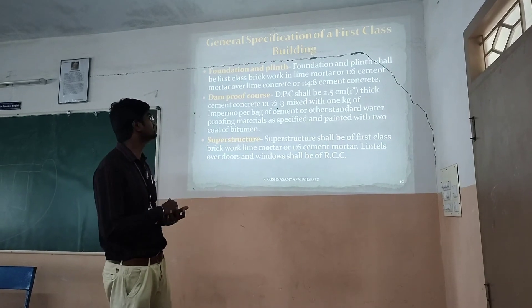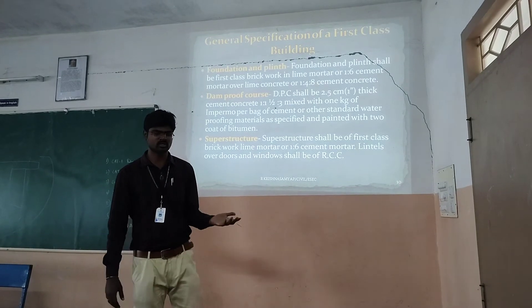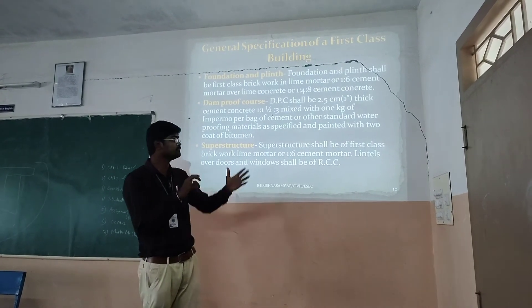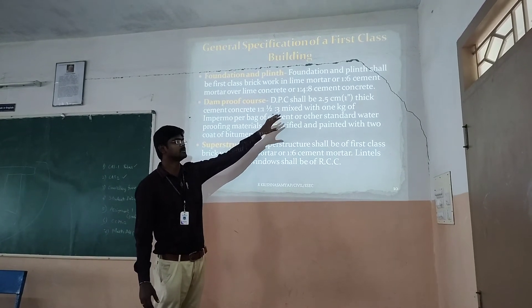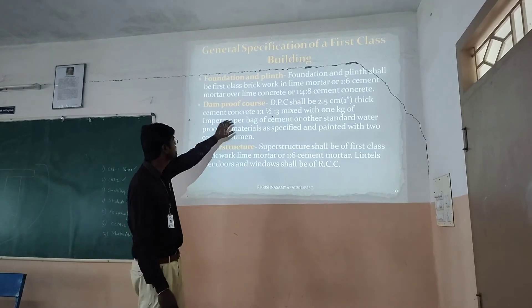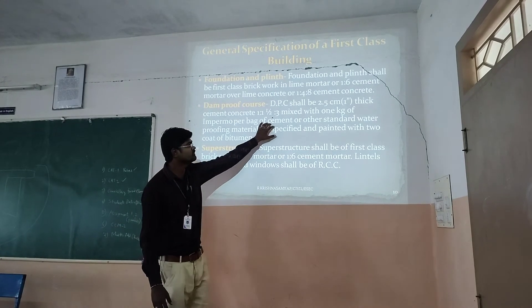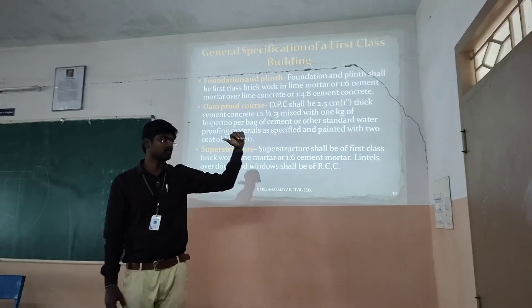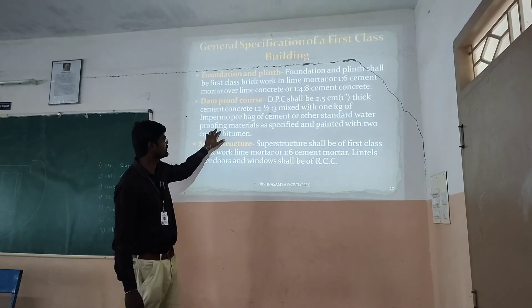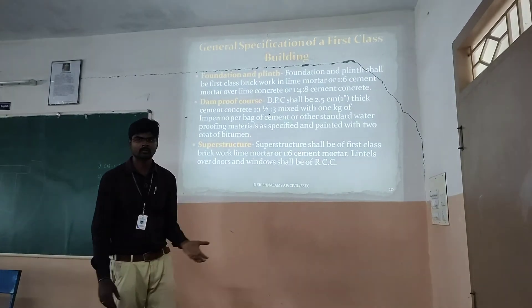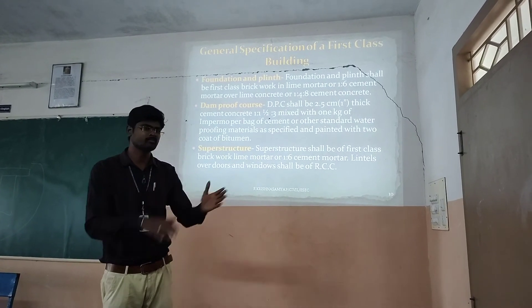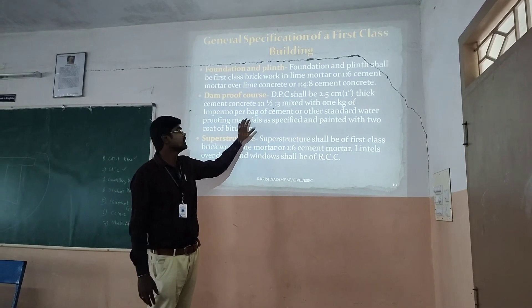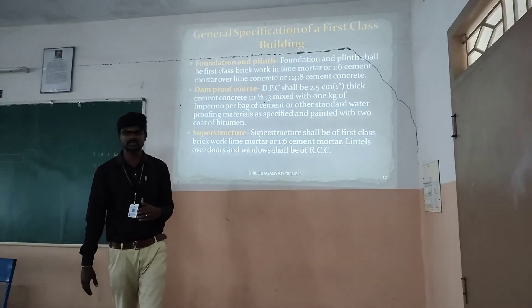The damp proof course (DPC) shall be 2.5 centimeters — approximately one inch — thick cement concrete in the proportion 1:1.5:3. It is provided with 1 kg of Impermo per bag of cement, always provided for water resistance. The DPC uses waterproofing materials as specified and is painted with two coats of bitumen. The DPC is provided with quality waterproofing materials at the ground level, between the foundation and the superstructure.